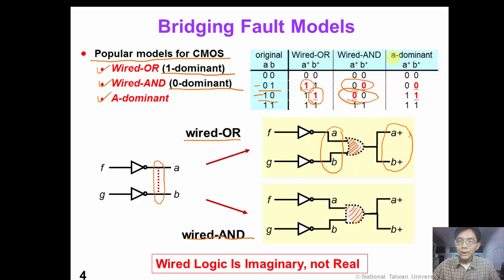Finally, we have the A-dominant fault model, which means the value of B is always controlled by the value of A. So these are three popular fault models for bridging faults. Please note that in this picture, the wire logic is just an imaginary gate — they are not real gates in the circuit.